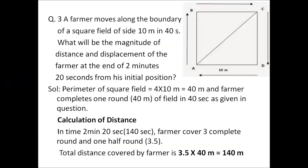We have a numerical problem now based on distance and displacement. This question is from our NCERT book: a farmer moves along the boundary of a square field of side 10 meters in 40 seconds. What will be the magnitude of distance and displacement of the farmer at the end of 2 minutes 20 seconds from his initial position?